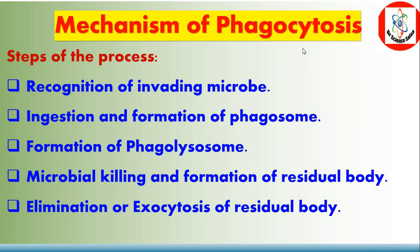Mechanism of phagocytosis — steps of the process. First: recognition of the invading microbe. Second: ingestion and formation of phagosome. Third: formation of phagolysosome. Fourth: microbial killing and formation of residual body. Fifth: elimination or exocytosis of the residual body.